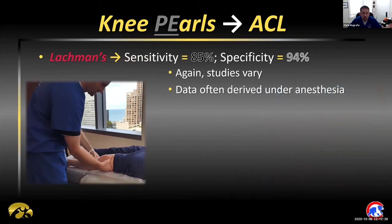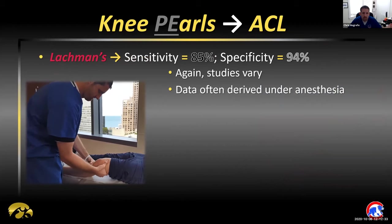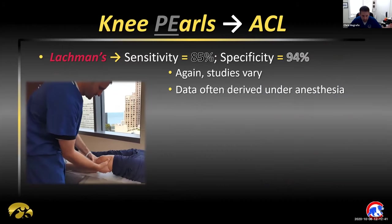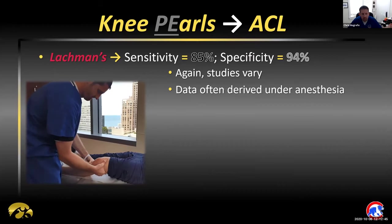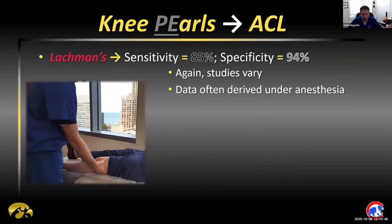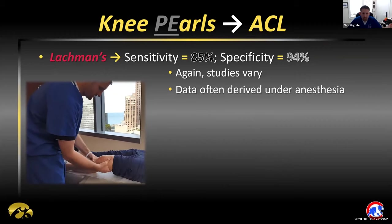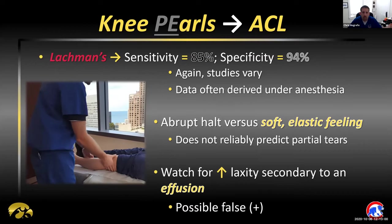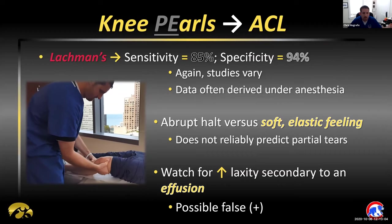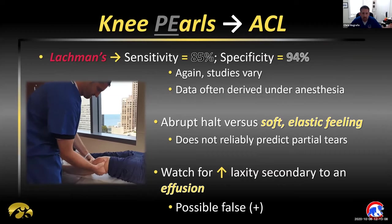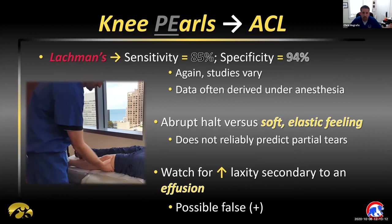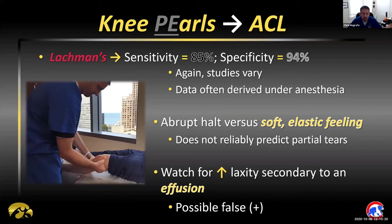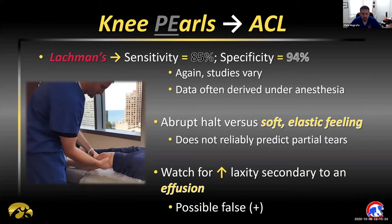Moving on to Lachman's test — another one you're probably quite familiar with. Higher sensitivity and roughly the same specificity. I like to slightly externally rotate the leg prior to doing so. Adding a light bounce to the leg can trick the patient so they won't know when you're going to start translating the tibia against the femur, allowing them to relax more. What you're feeling for is an abrupt halt versus a soft, elastic feeling. Keep in mind this doesn't necessarily account for partial tears, and laxity in the setting of an effusion can result in a false positive.